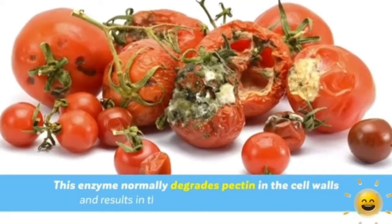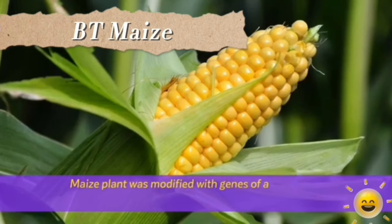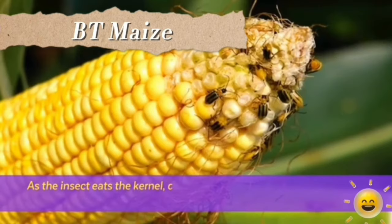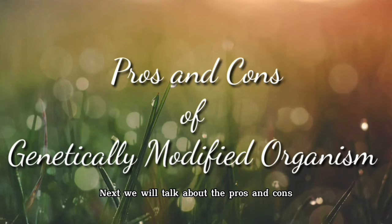This enzyme normally degrades pectin in the cell wall and results in the softening of fruit, which makes them more susceptible to being damaged by fungal infections. The next example is Bt maize. The maize plant was modified with genes of the bacterium Bacillus thuringiensis to synthesize delta protein, which is responsible for resistance against insects. As the insect eats the kernel, delta protein is activated in the gut, resulting in paralysis of the digestive system. The insect stops eating within a few hours and eventually starves.